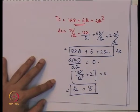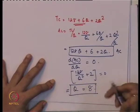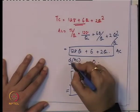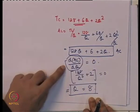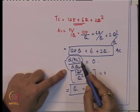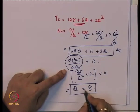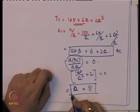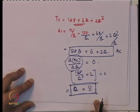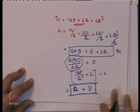When Q equals 8, the average cost is minimum. Taking the derivative of AC = 128/Q + 6 + 2Q with respect to Q and setting it to zero gives Q = 8. Now, taking the same cost function, we find the marginal cost by taking the first order derivative of total cost with respect to Q, and then equalize marginal cost to average cost to verify we get the same optimum output level.